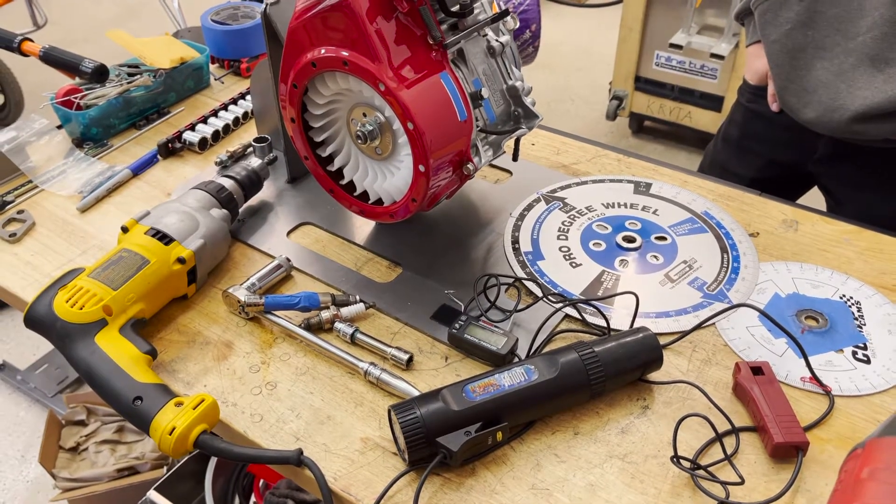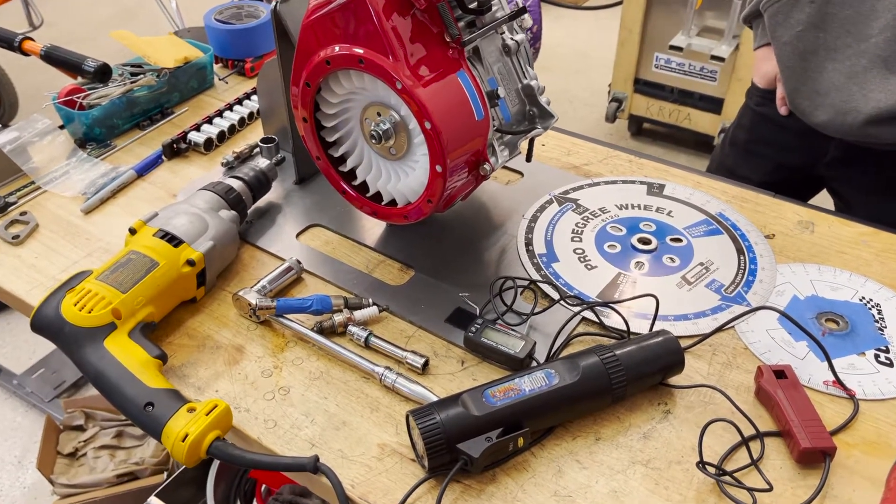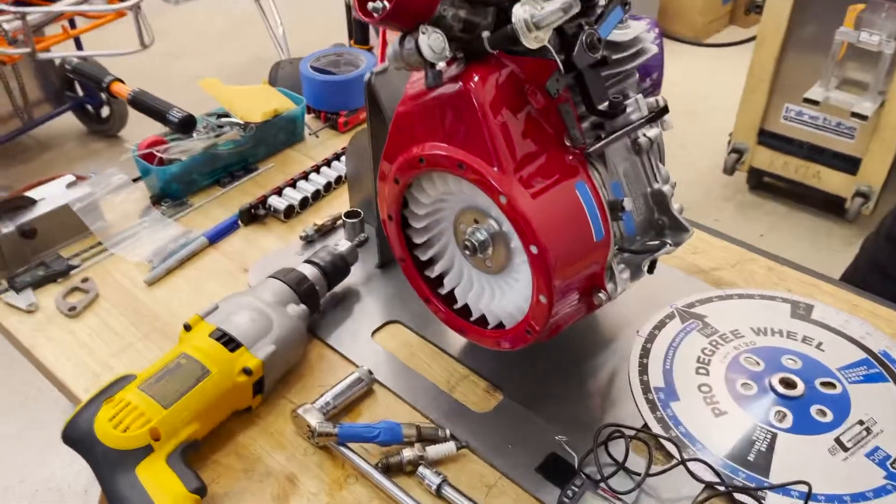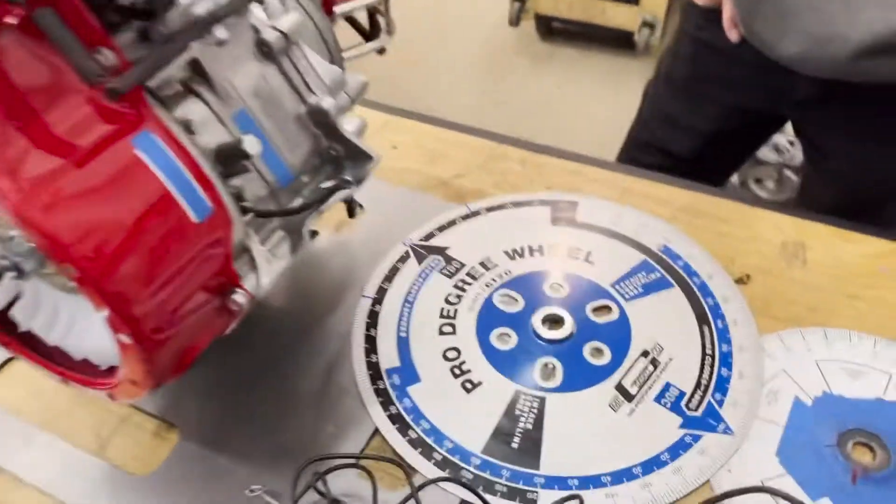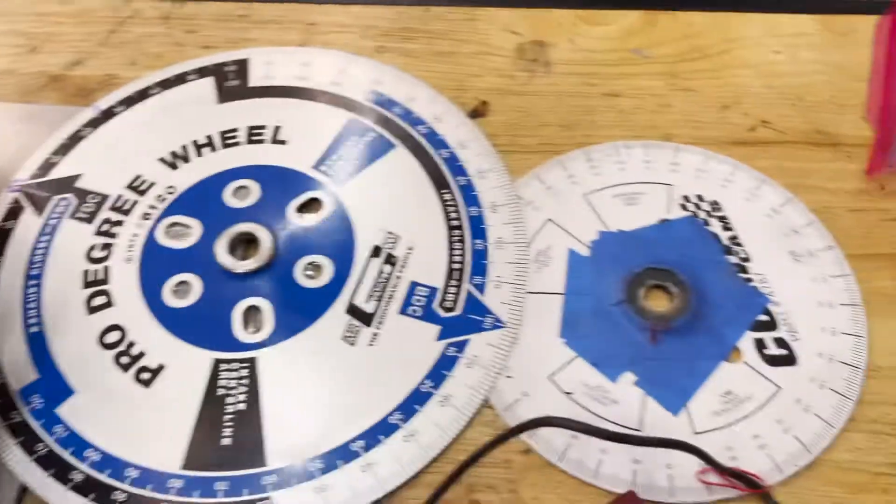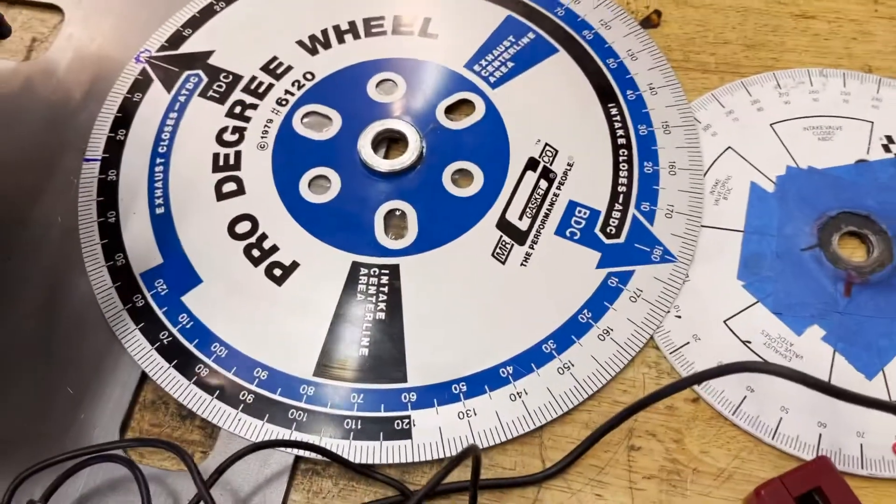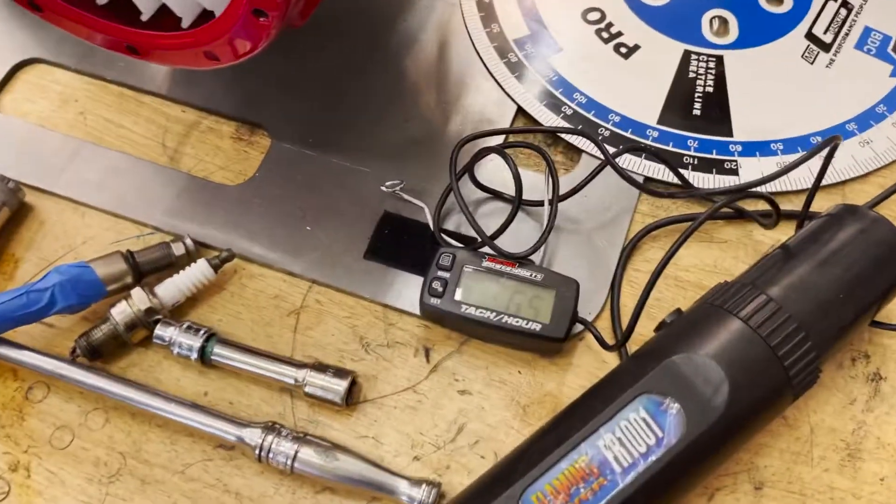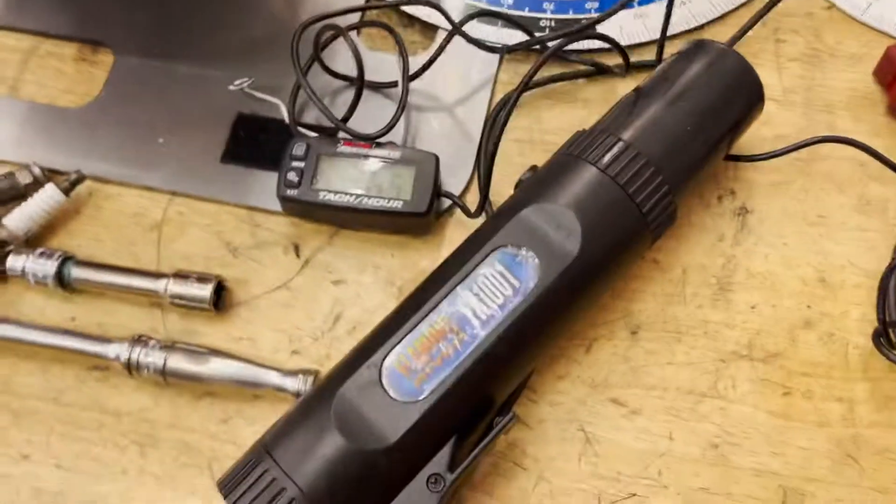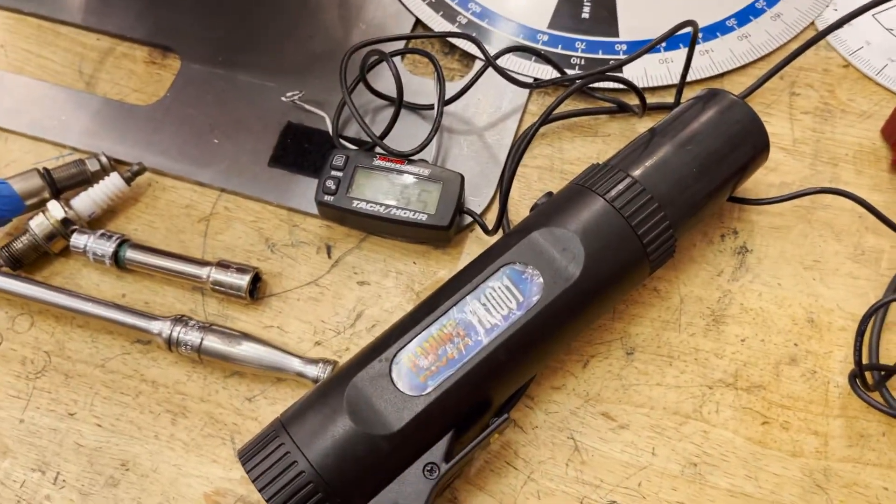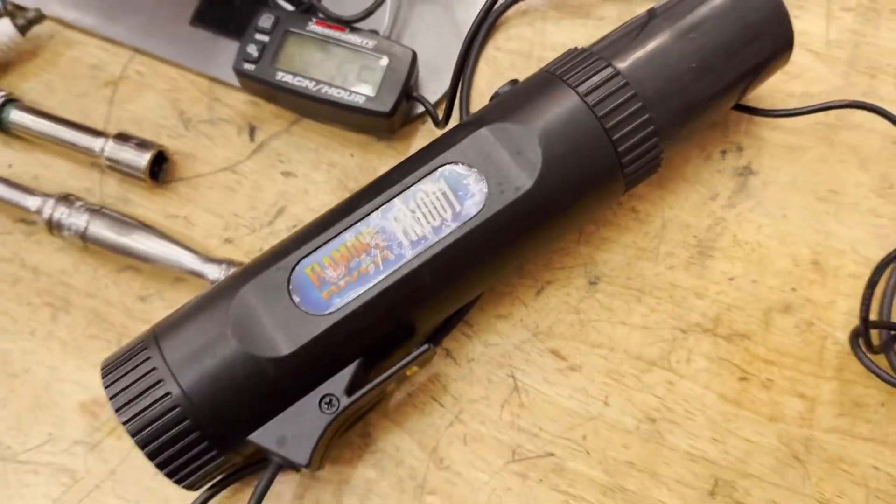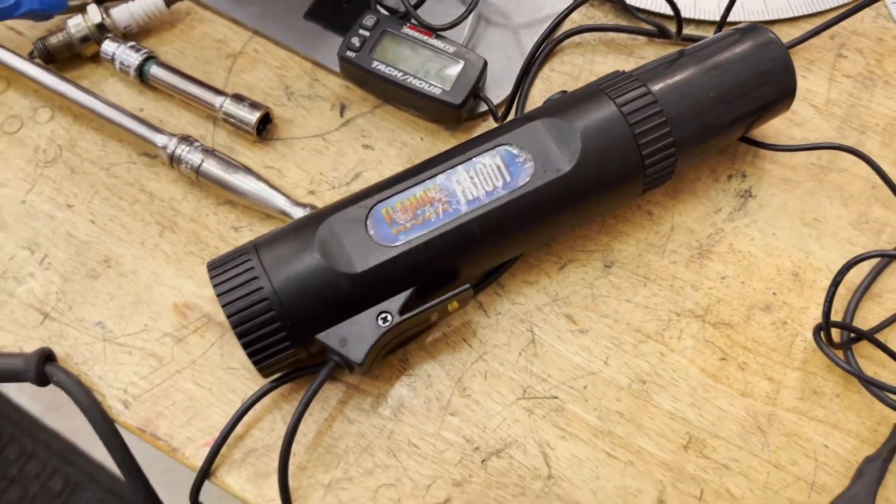All right, today we're here at Crybaby Performance and we're going to do timing. I want to lay out what you need to do it. You need a degree wheel. The bigger the wheel, the better, because you can read the marks better. You need a little tachometer and a battery-operated timing light. Flaming River makes this one. Always make sure you have brand new batteries in it.